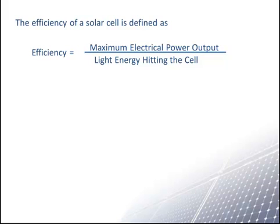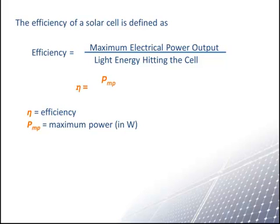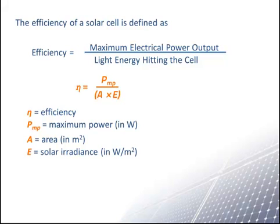In symbols, we write that the efficiency η is equal to the maximum electrical output power in watts divided by the area of the cell times the irradiance when the cell is measured. Since we usually describe the efficiency as a percent, we multiply this fraction by 100%.